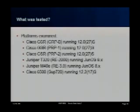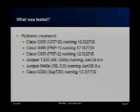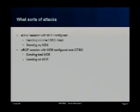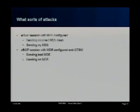We tested a variety of platforms — Cisco GSRs, higher-end Juniper boxes, and the 6500 — running code released within the last several years. The types of attacks we looked at: what happens when you have a BGP session with MD5 enabled and send incorrect hashes? What happens when you send no hash at all — just a regular packet? And what happens when you have BGP enabled with the TTL security check and send the same kind of traffic?